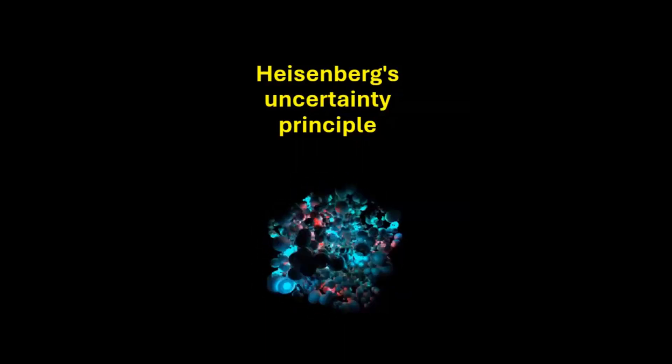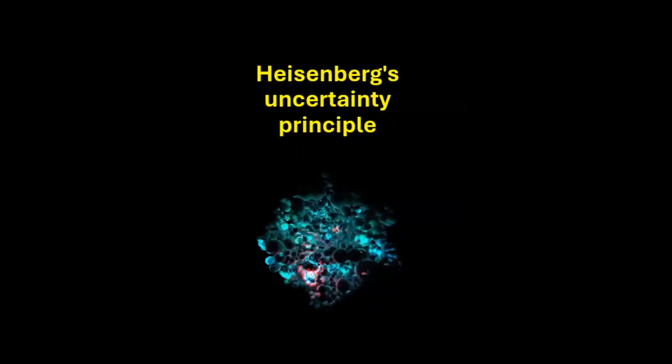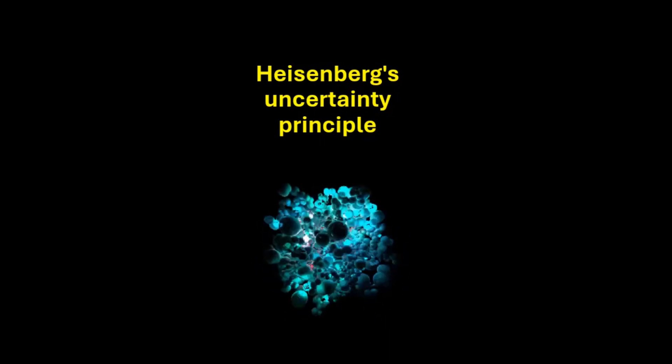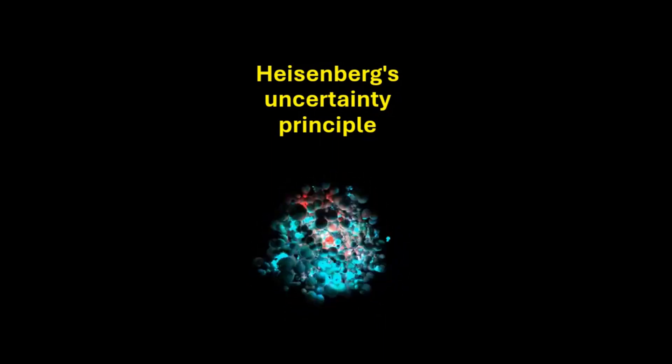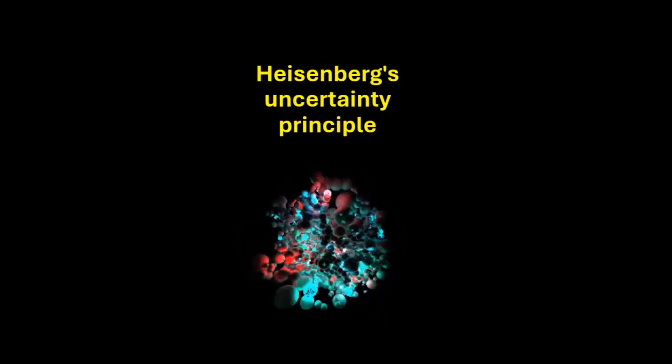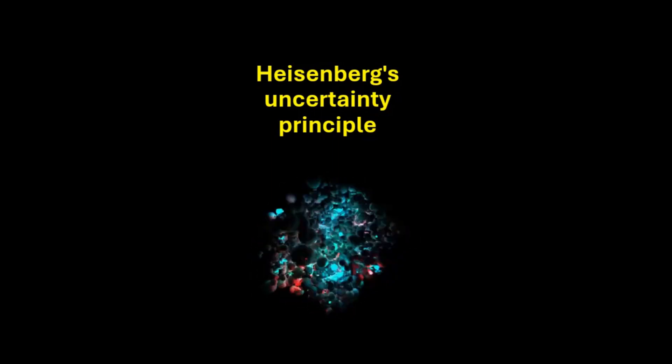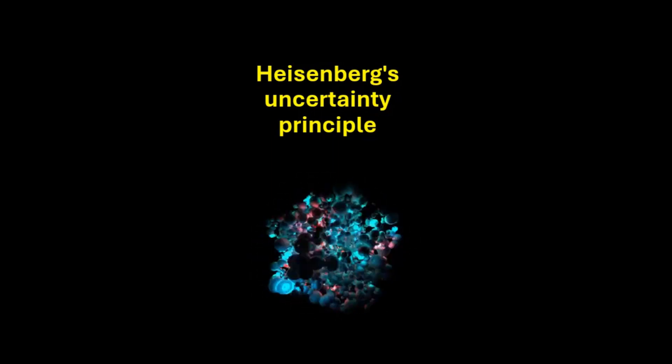Werner Heisenberg's Uncertainty Principle states that certain pairs of complementary properties of particles like position and momentum or energy and time cannot be precisely measured simultaneously.